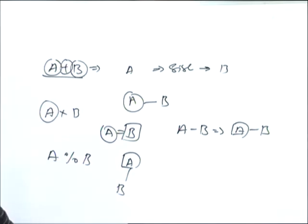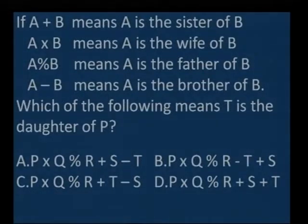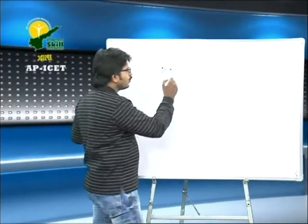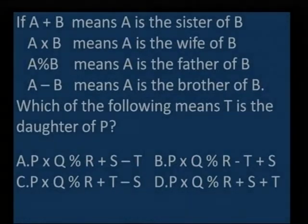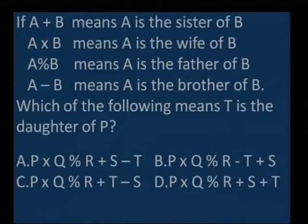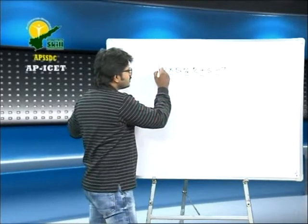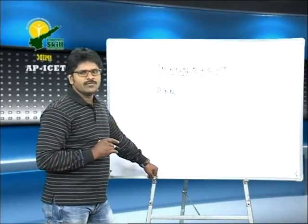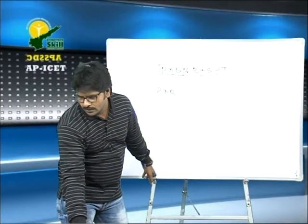The question asks: which of the following means T is the daughter of P? We need to draw a diagram for clarity. Consider option A: P cross Q percentage R plus S minus T. P cross Q means P is the wife of Q, so Q is male. Q percentage R means Q is the father of R. R plus S means R is the sister of S. S minus T means S is the brother of T.